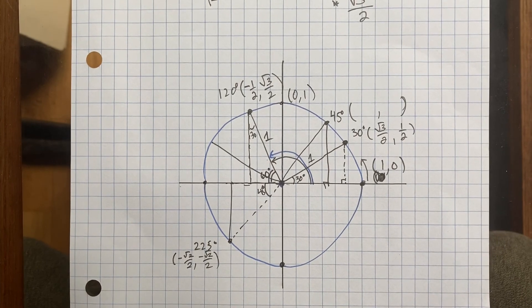Let's do one more: 180 plus another 45 degrees gives 225 degrees. Since this is a 45-degree angle past 180 degrees, I need to find the x and y coordinates. In a 45-45-90, both sides are the square root of 2 over 2. But they're both negative down here in this quadrant. So the coordinates of this point are negative root 2 over 2, negative root 2 over 2.